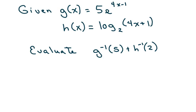Hi everyone! We're given two functions and we're going to find the inverses of both of these and then evaluate them. We're going to find the inverse of g at 5 and add h inverse of 2. The first thing we have to do is find the inverses of both of these functions.